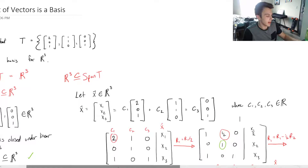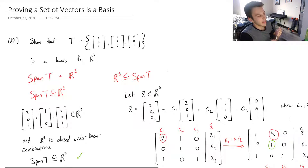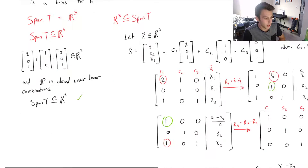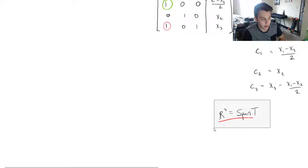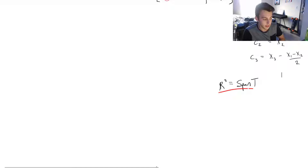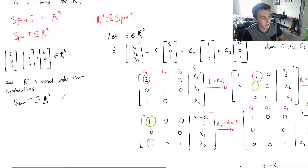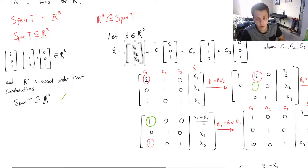Remember, to show these vectors form a basis, we need to show both that they span the entire vector space and that they are linearly independent. We've shown the spanning part. For linear independence: if we set X equal to the zero vector, and the only solution to the linear combination equaling zero is when all constants equal zero, then the vectors are linearly independent. Rather than setting up a new system, I've already solved exactly this system.